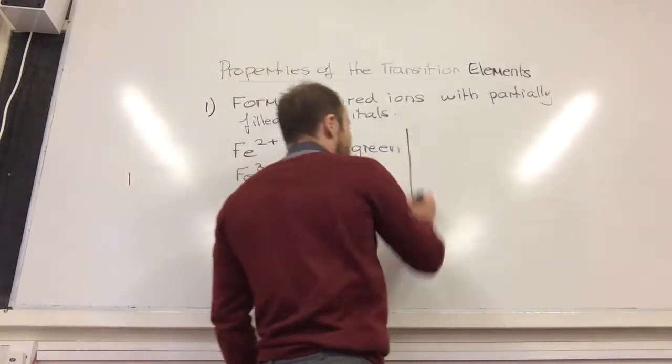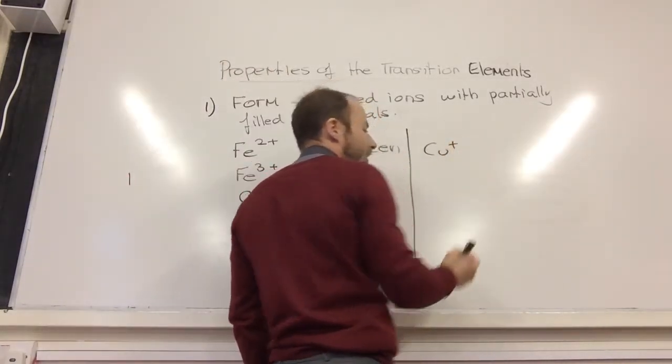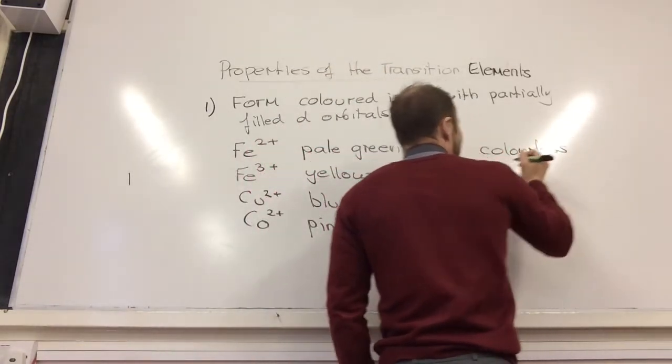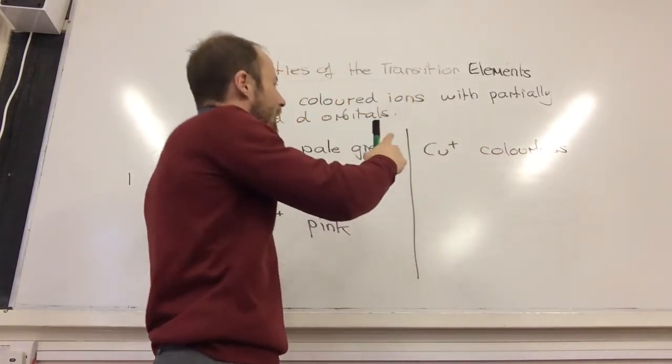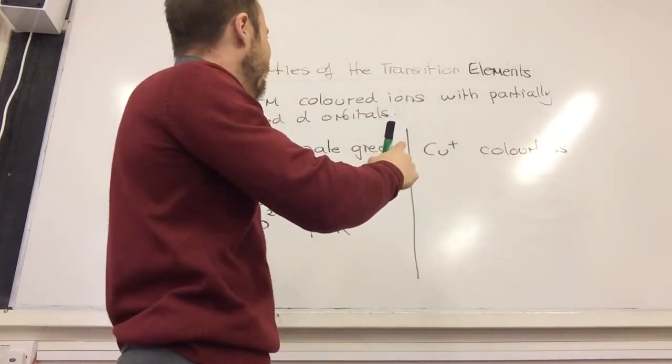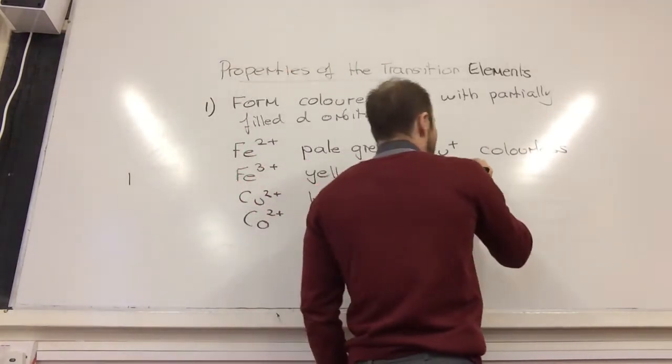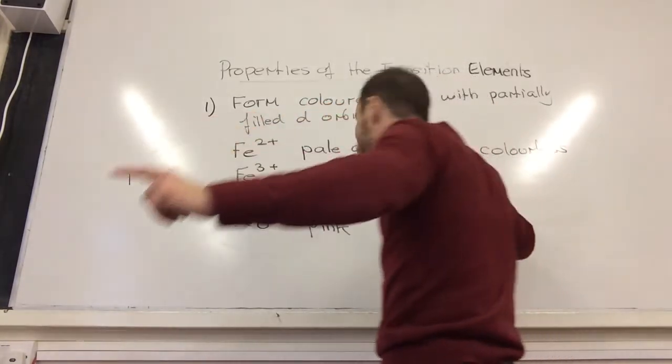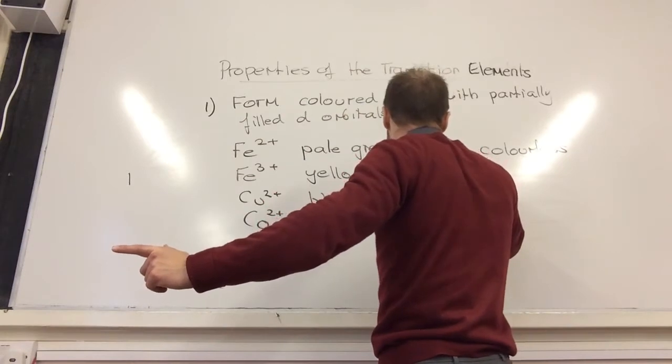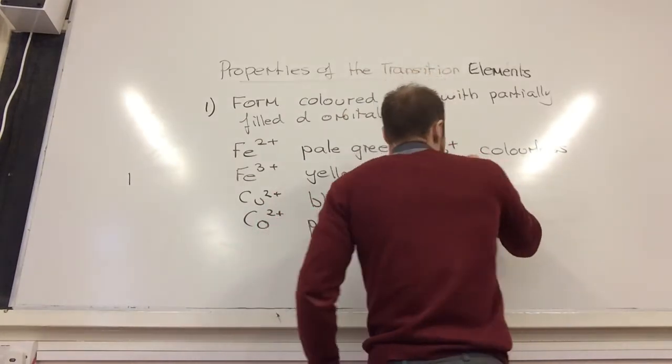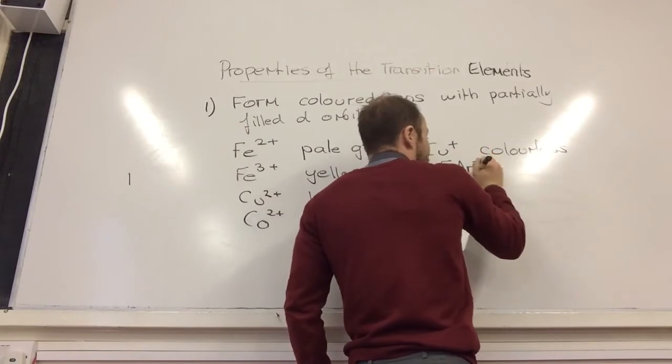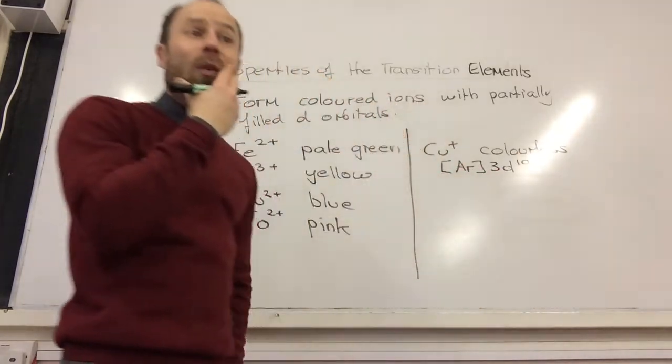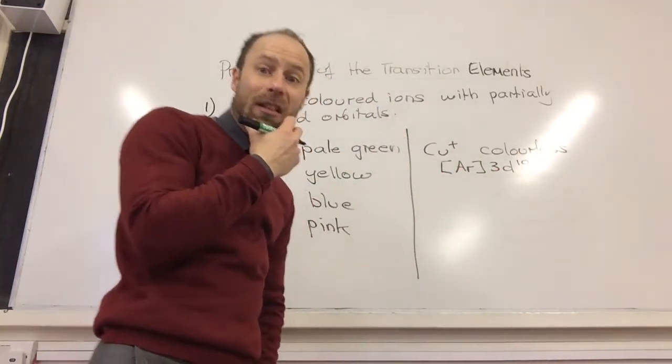Can I just do one more? Copper plus. Colorless. Brilliant. Now, why is this colorless? You may think that's strange because I just told you they form colored ions. Well, copper is a transition metal, but copper plus doesn't have partially filled d-orbitals. The electronic configuration of copper plus is Argon 3D10, and that's why it hasn't got a partially filled D sub shell.